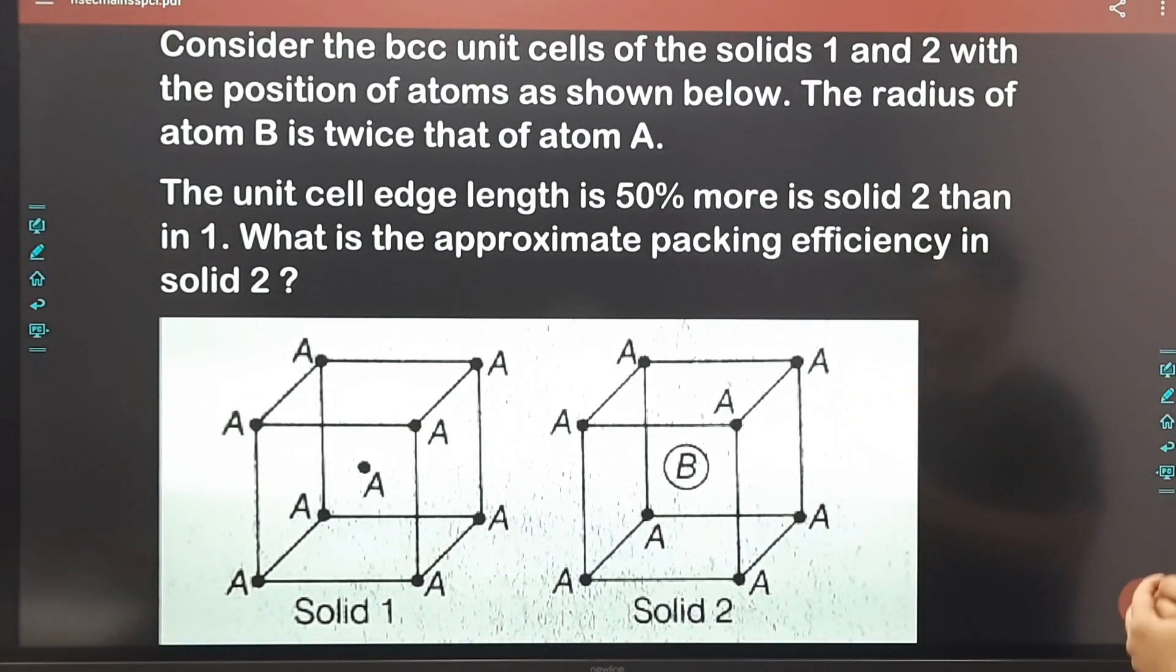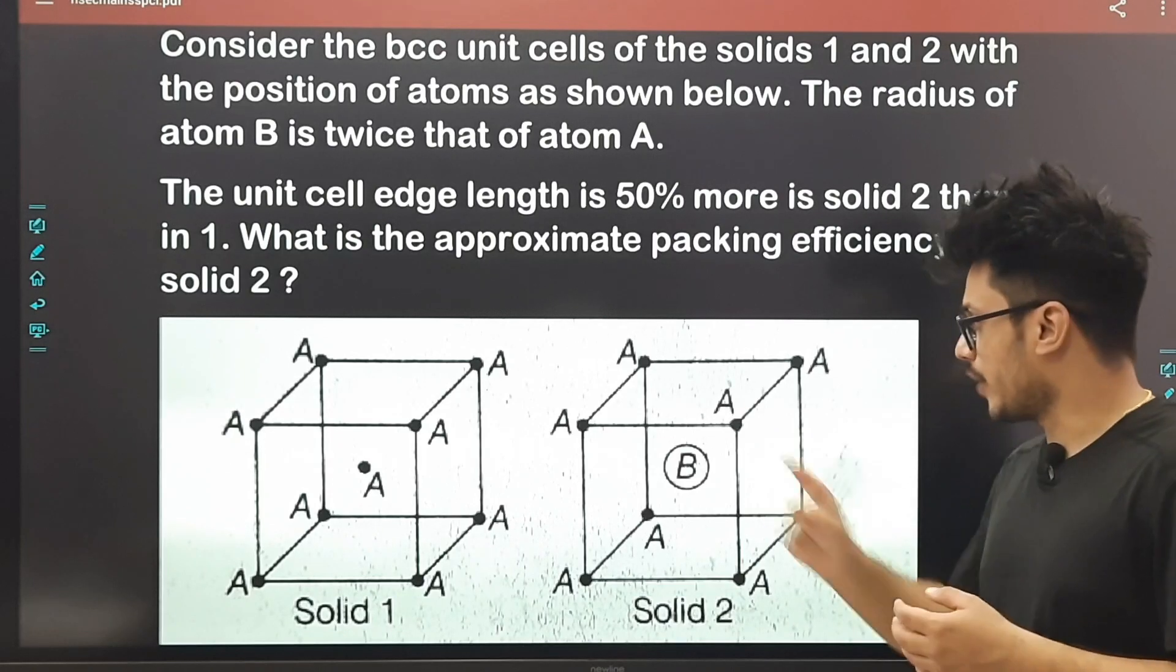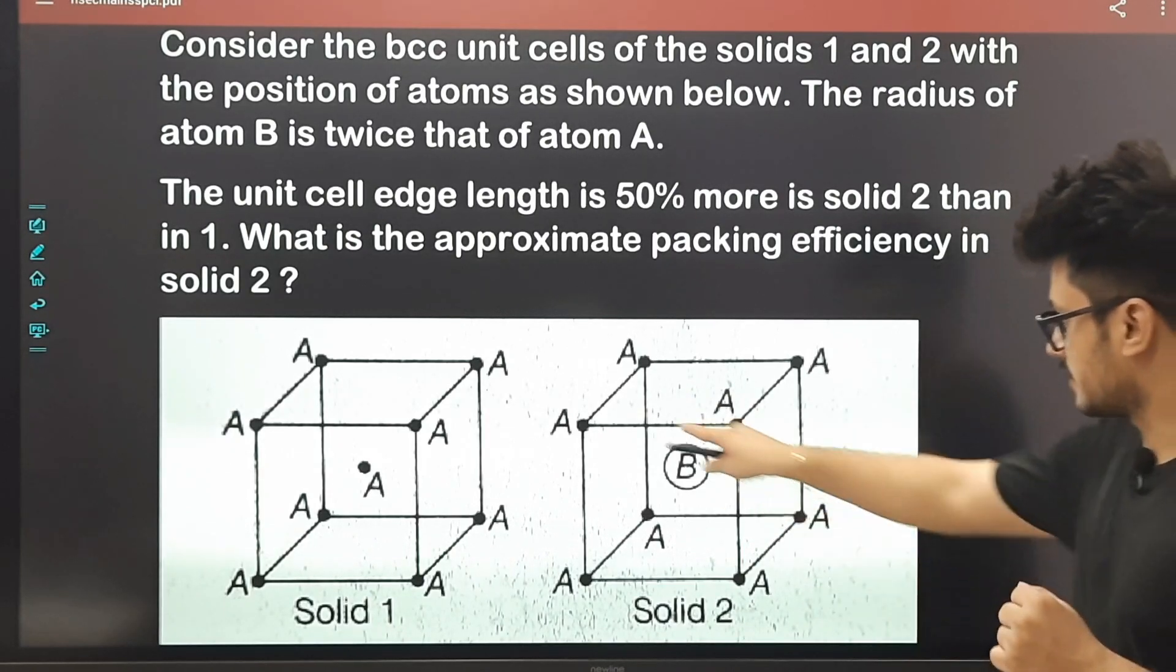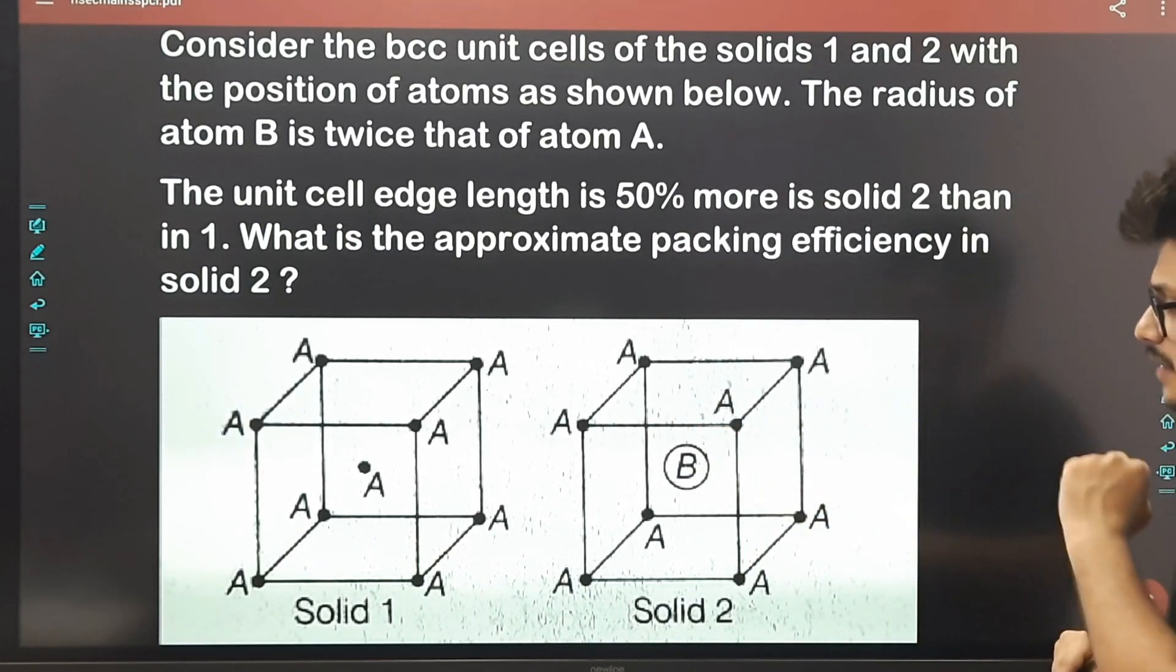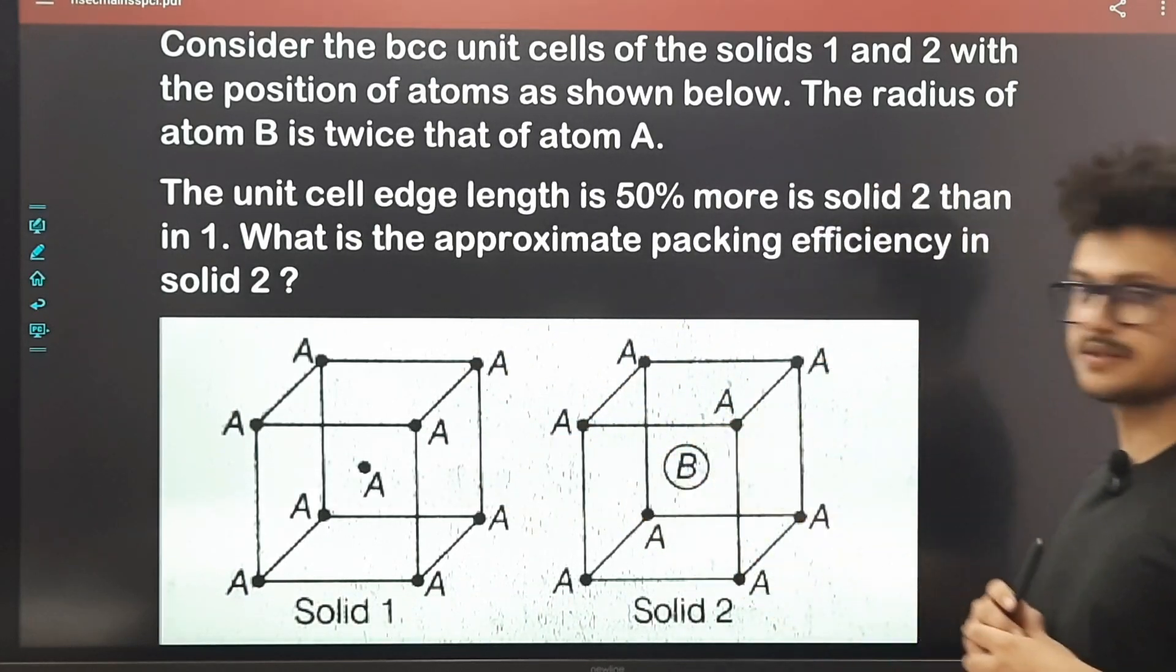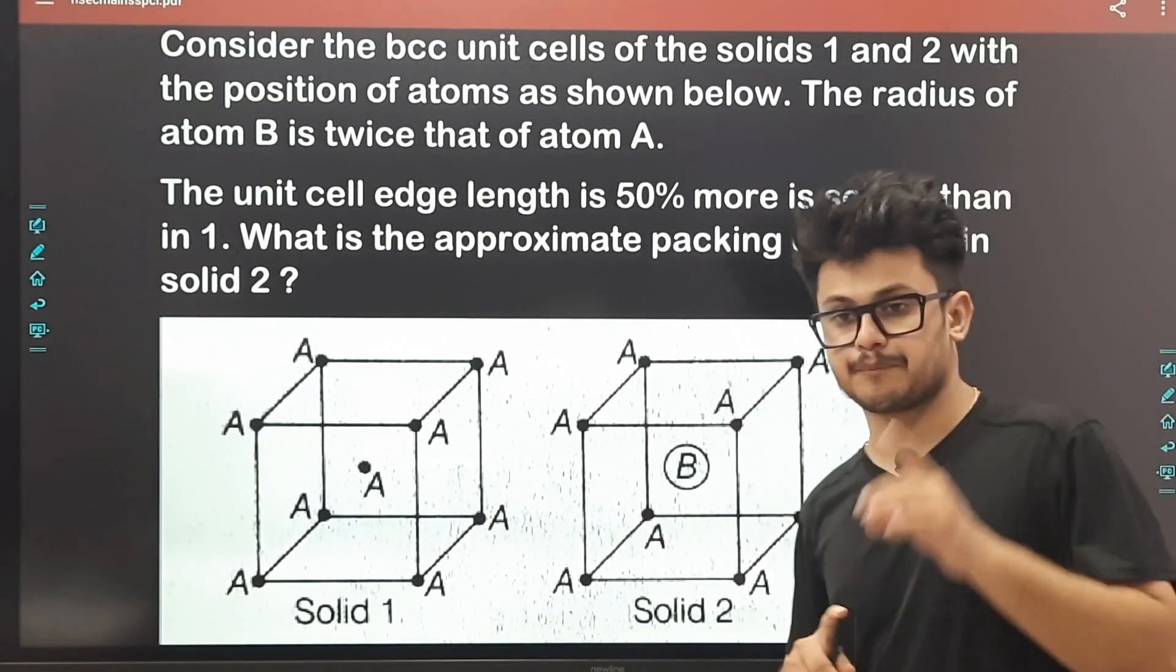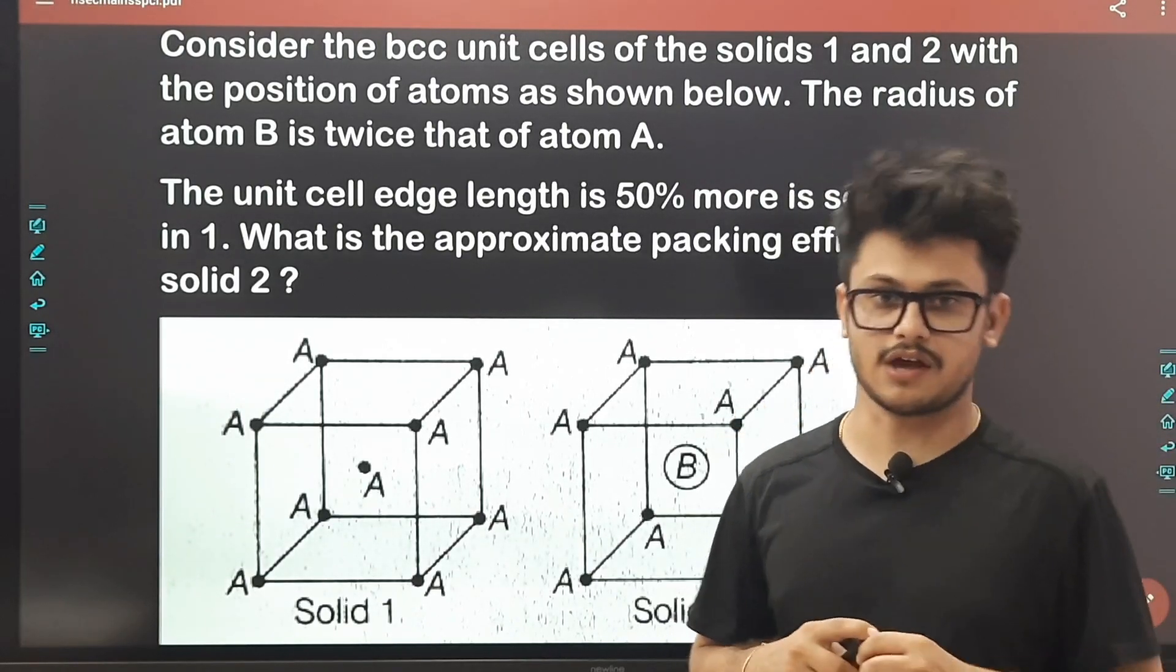Aapko ye bataya hai ki jo B ka radius hai wo A ka radius se double hai, aur iski jo edge length hai ye 50% is edge length se zyada hai. Iske comparative, yahan iski baat ho rahi hai. Aur aapko batana hai ki is wale solid ka approximate packing efficiency kya hoga.